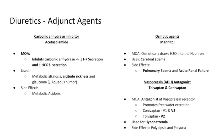Finally, lower yield: tolvaptan and conivaptan — vasopressin/ADH antagonists. ADH works on the collecting ducts to absorb free water so we don't have diuresis and urine is concentrated. By antagonizing ADH, we promote free water excretion. We're primarily targeting the vasopressin V2 receptor. Conivaptan was the first generation, nonspecific, working on V1 and V2. Tolvaptan is the second generation, more specific for the V2 receptor.